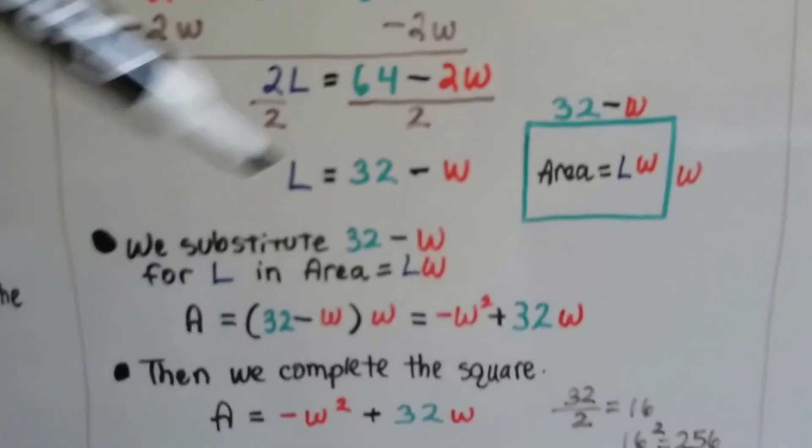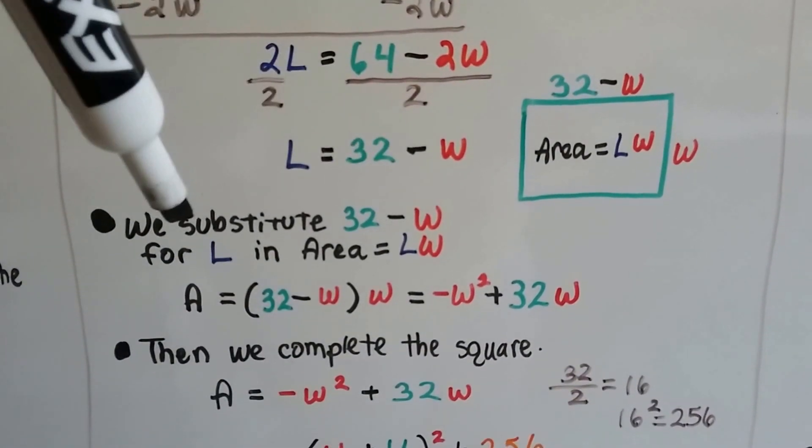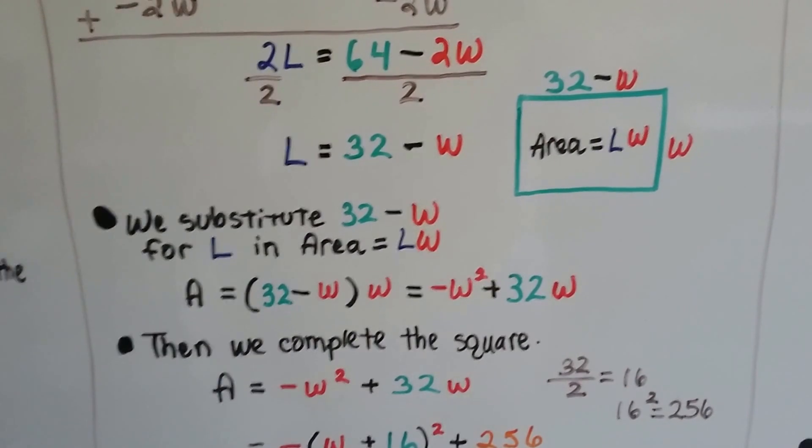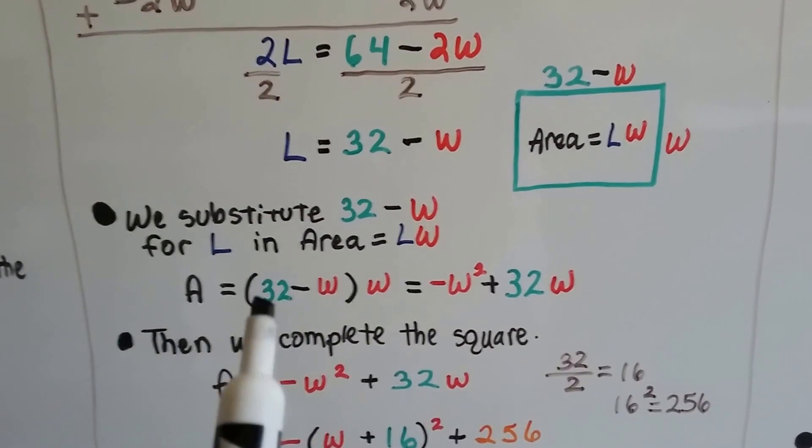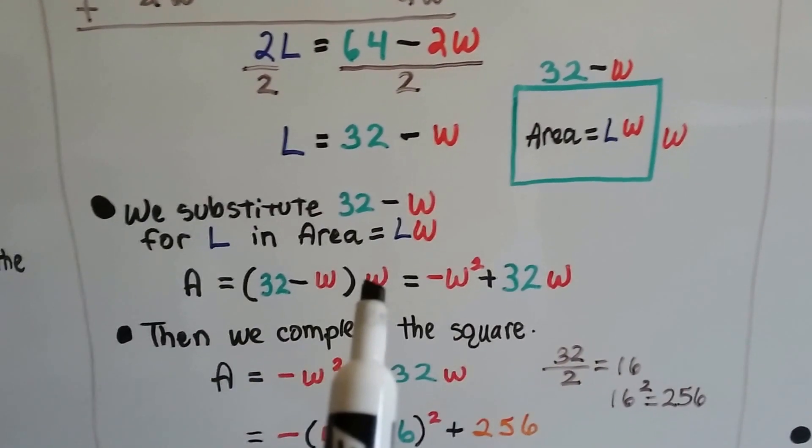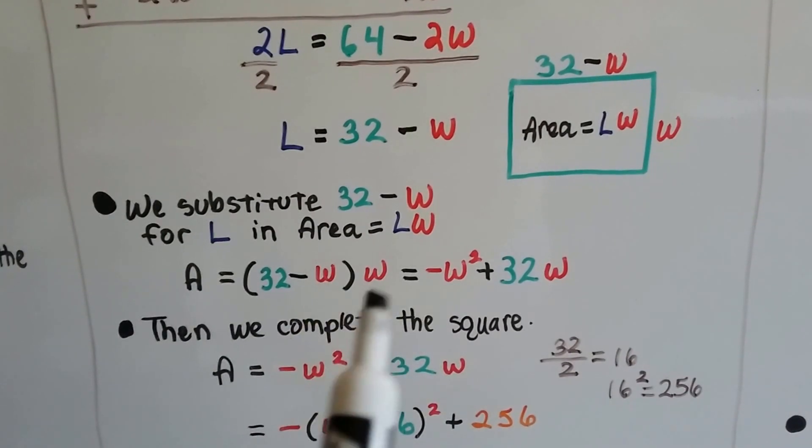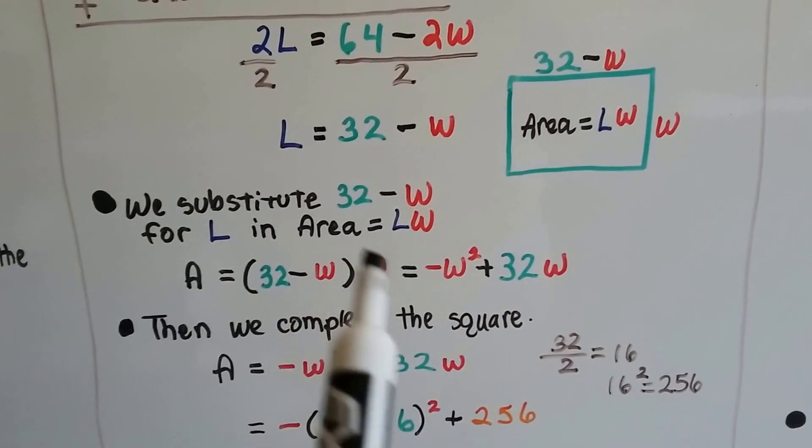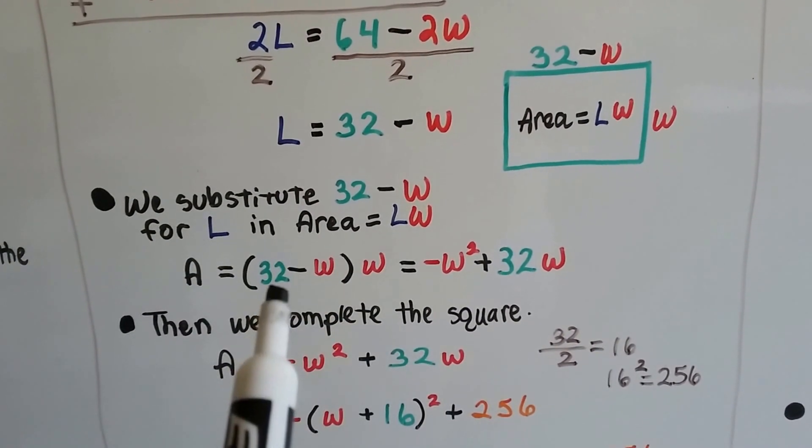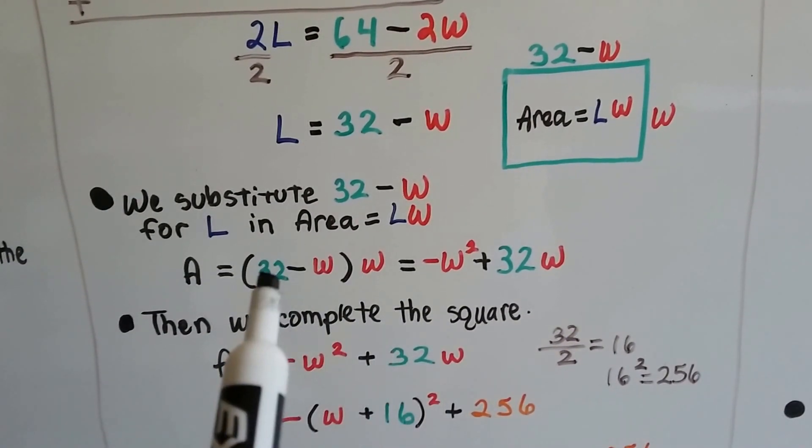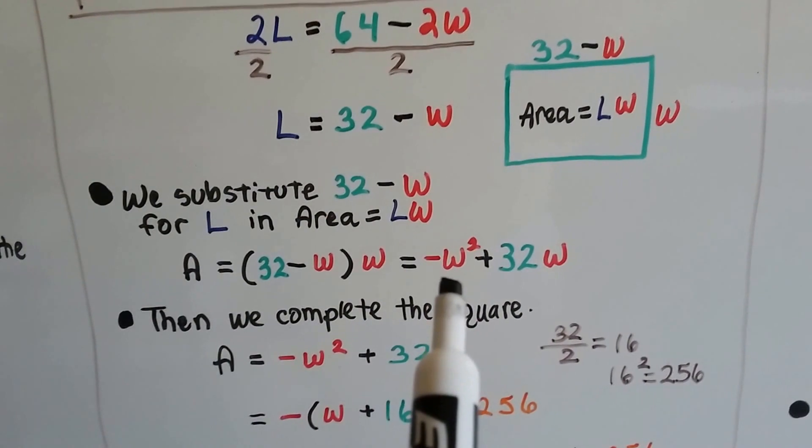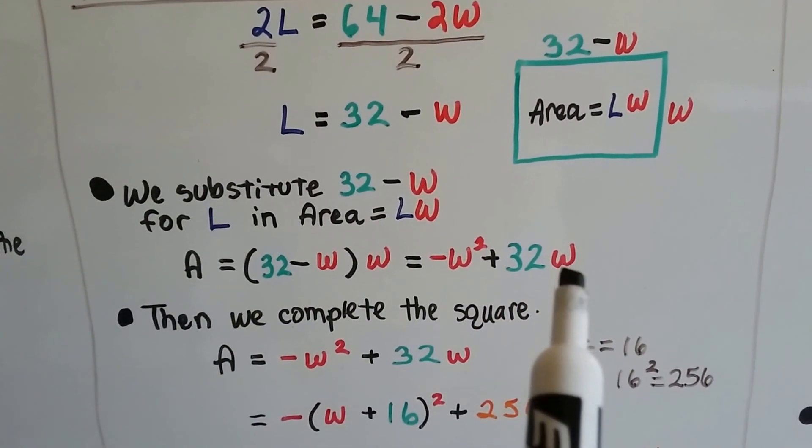We substitute 32 - W into this formula, length times width, and we get A = (32 - W)W. We can distribute this W. We're going to get -W² with these two, and then we're going to get 32W by distributing it over there. So now we have -W² + 32W.